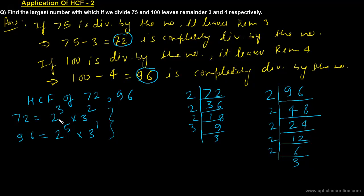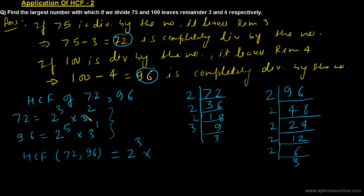Now with the help of this factorization we can find the HCF of 72 and 96. The HCF is found by taking the highest power of each prime common to both. The highest power of 2 common to both is 2³, and the highest power of 3 common to both is 3¹. So the HCF will be 8 × 3, which is 24.